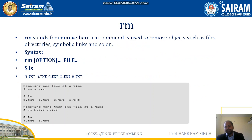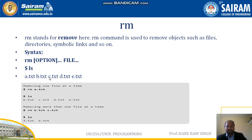The next command is rm, which stands for remove. The rm command is used to remove objects such as files, directories, symbolic links, and so on. The syntax is 'rm [option] file'. For example, if we run ls and see a.txt, b.txt, c.txt, d.txt, and e.txt, that means we are working in a current directory with these five files.